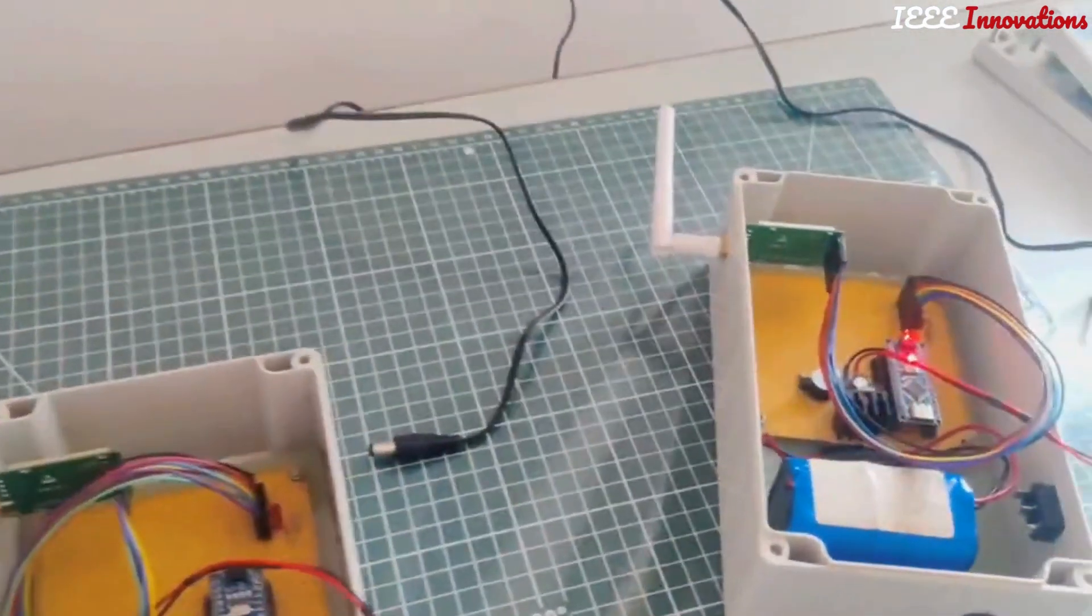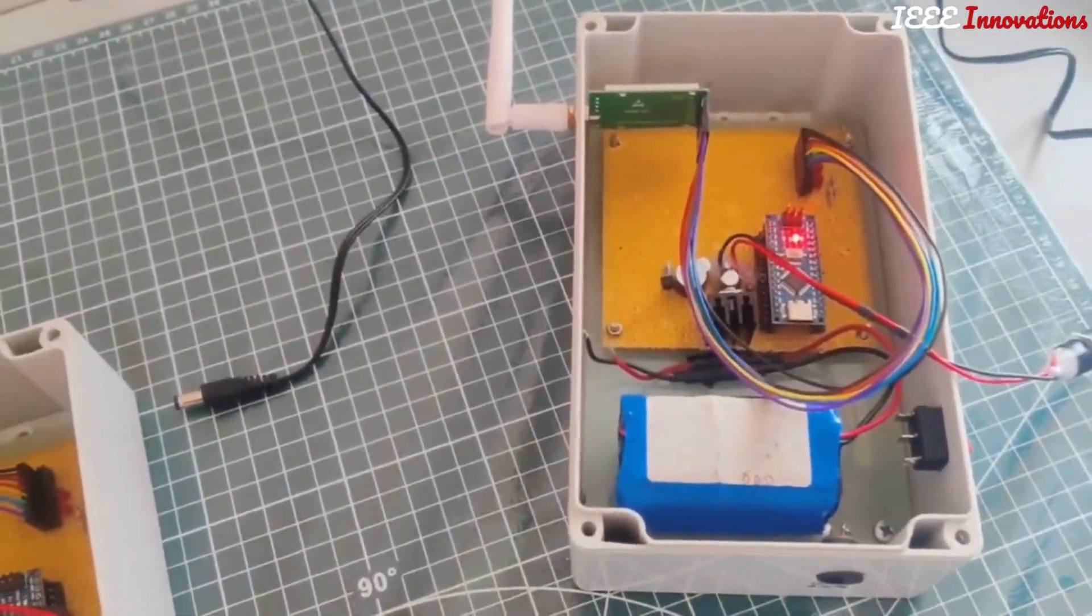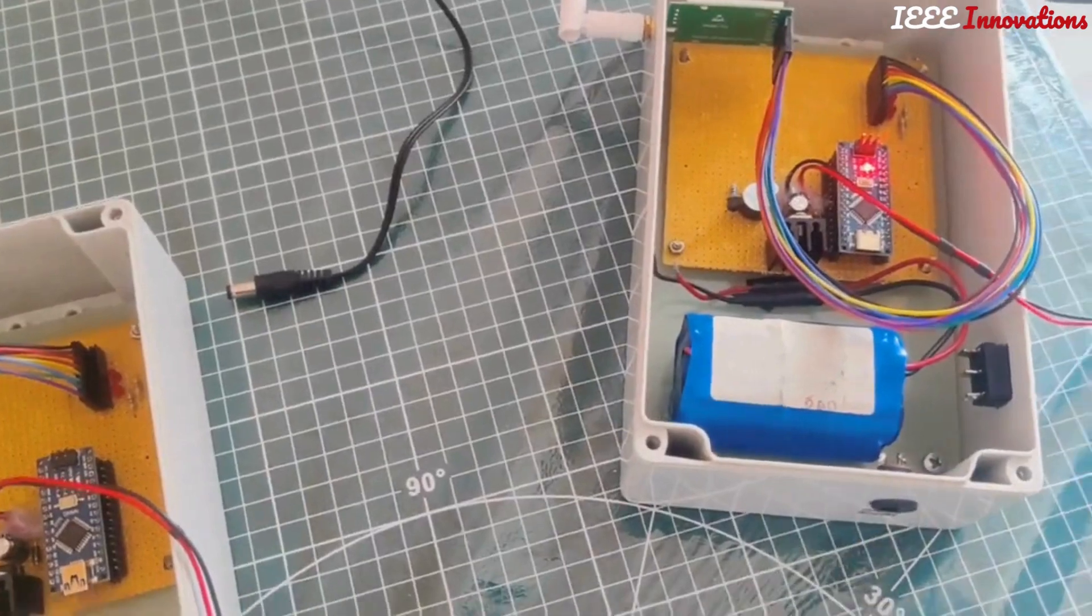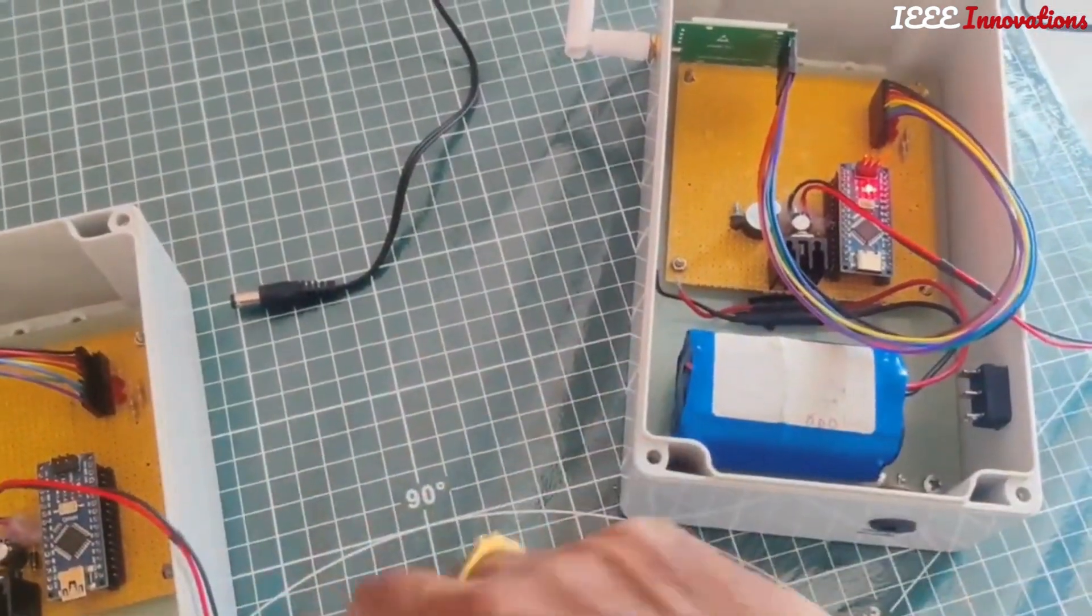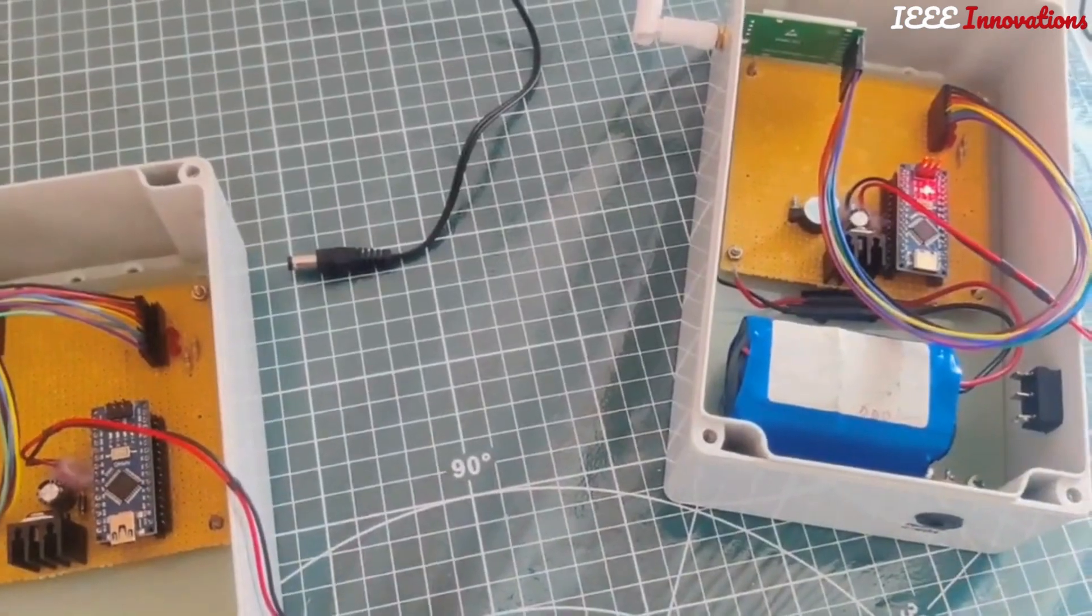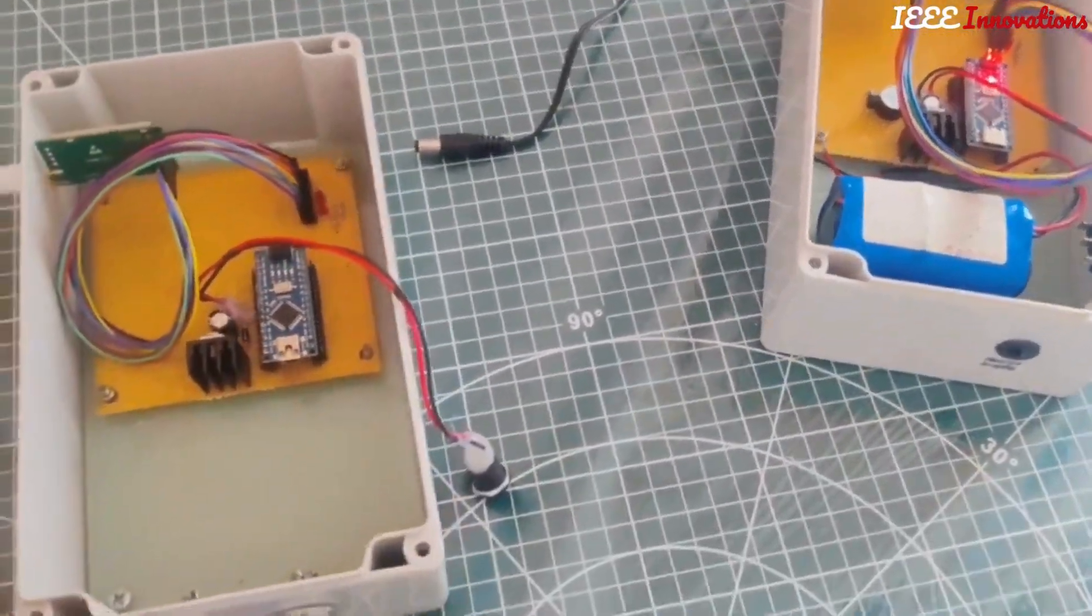And this is the receiver side. We connected the buzzer to demonstrate. This is the receiver and this is the transmitter. It's not like we can only transmit from here to there, but for the demonstration we just use this configuration.